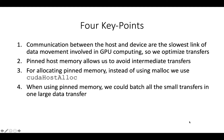First, the communication between the host and the device is the slowest link of the data movement involved in GPU computing, so it's important we optimize transfer. Second, we can use pinned host memory to avoid intermediate transfer. Third, to use pinned host memory we use cudaHostAlloc instead of the usual malloc or new. Finally, one further optimization technique is that we can batch all the small transfers into one large data transfer.